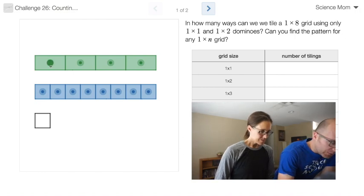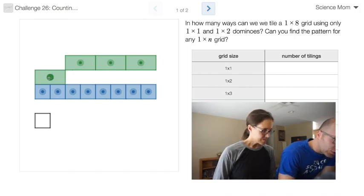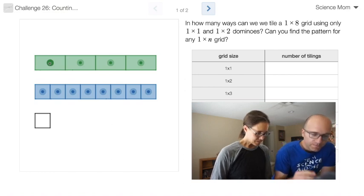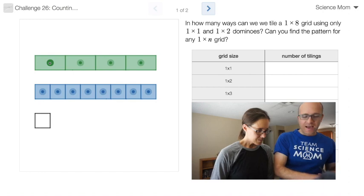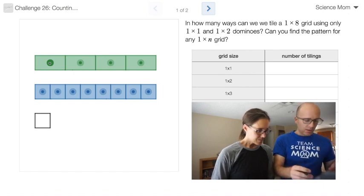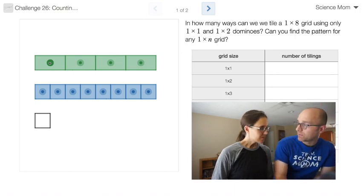So I have these dominoes that are either 1 by 1 or 1 by 2. And I want to know in how many different ways can we use those dominoes to tile a 1 by 8 grid? But to really help you understand the problem, I'm going to do a few examples with you.